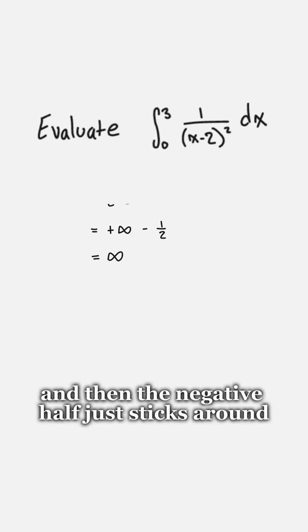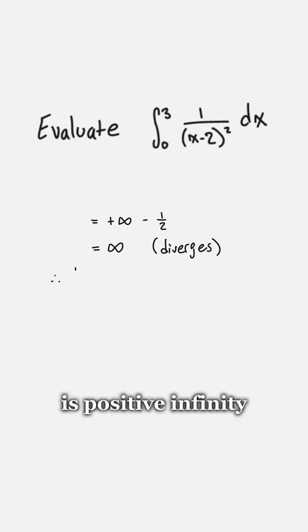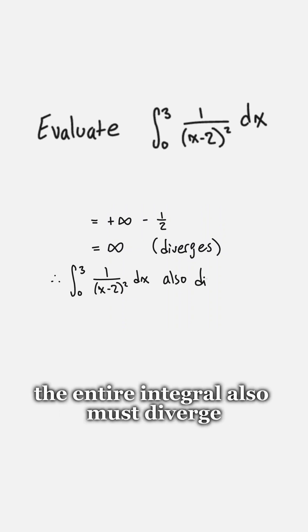And then the negative half just sticks around. So our final answer for that one is positive infinity, which means that the first half of that integral diverges. So that means that we can conclude that the entire integral also must diverge.